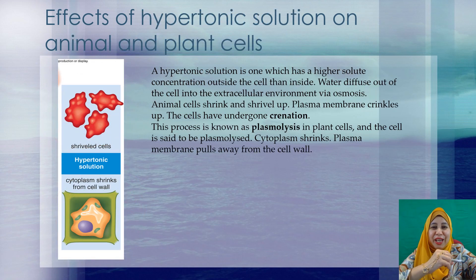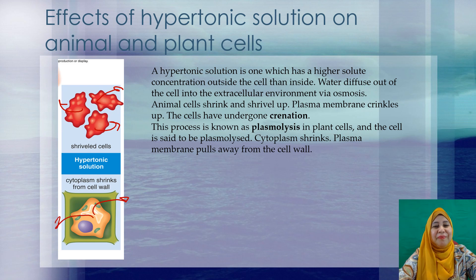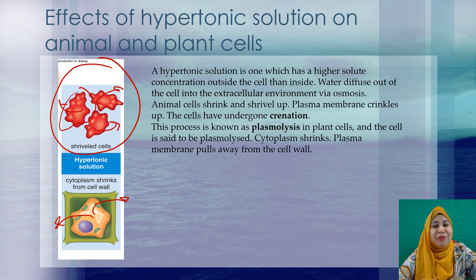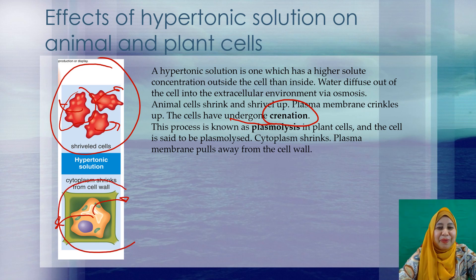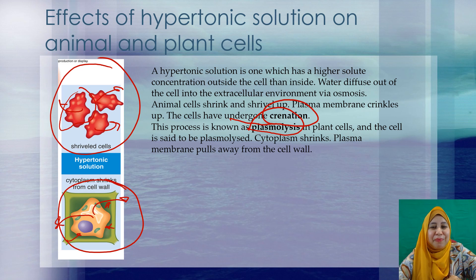A hypertonic solution has a higher solute concentration outside the cell compared to inside. Due to that, water will diffuse out of the cell by osmosis. For the animal cell, since water diffuses out, the cell will shrink and shrivel — the plasma membrane crinkles and the cell undergoes a process known as crenation. For the plant cell, the process is known as plasmolysis, whereby the cytoplasm shrinks and the plasma membrane is pulled away from the cell wall, and the vacuole also shrinks.